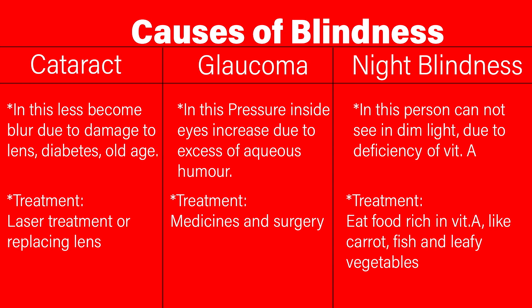In glaucoma, normally the pressure of the eye increases due to excess of aqueous humor. This also normally occurs in old age people, and treatment for this is medicines and surgery. Coming to the last one — night blindness. The person suffering from this cannot see in dim light. It is caused due to the deficiency of vitamin A. Treatment for this is to eat a diet rich in vitamin A, like carrot, papaya, fish, and leafy vegetables.